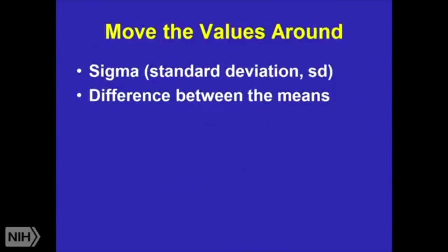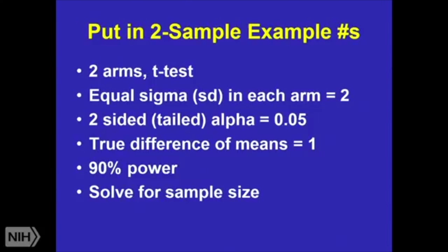What's nice about trying to design the study is I can move all these values around. You can't get 170 medical records — what can you do? What other assumptions can we make? You can see if it's not tenable at all to do the study, or what your trade-offs are. For a different study, going back to the two-sample: let's say I have a standard deviation of two in each arm — sometimes you have different standard deviations for each arm. I'm going to run a two-sided alpha 0.05 test, a true difference in means of one, 90% power, and solve for sample size.